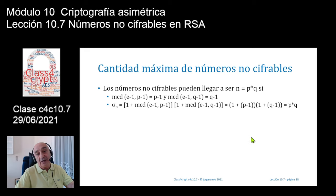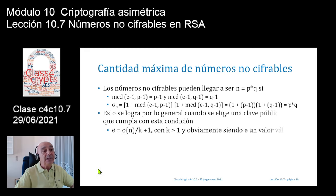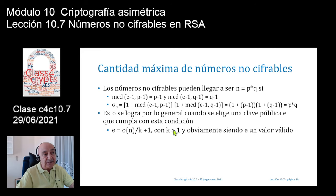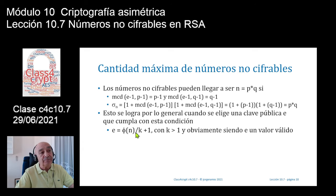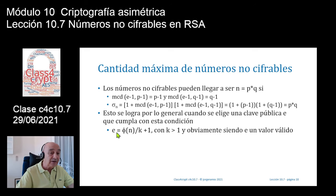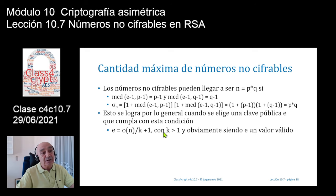Esto se logra cuando se utiliza una clave pública relacionada con φ(n)/k + 1. Hay que dividir entre k porque el grupo trampa P-1 por Q-1 es par, y se suma 1 para que dé un número impar, ya que tanto la clave pública como la clave privada deben ser números impares. El valor de k debe ser mayor que 1 porque la clave pública debe ser menor que φ(n).